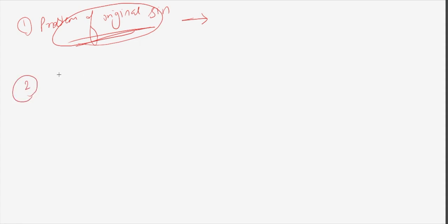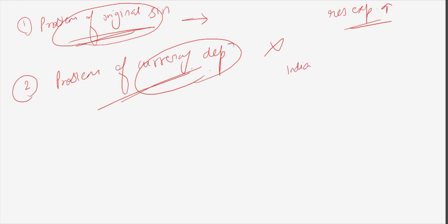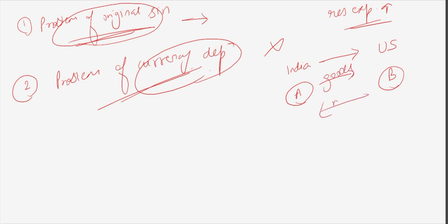The second problem is currency depreciation. When resource exports rise, is there a problem of currency depreciation? The answer is no — when a manufacturer exports goods to a foreign importer, money flows back in, so there is no problem of currency depreciation in that scenario.